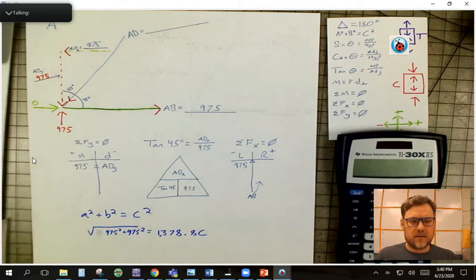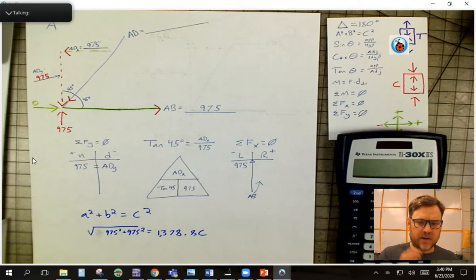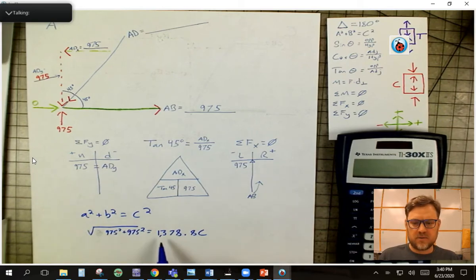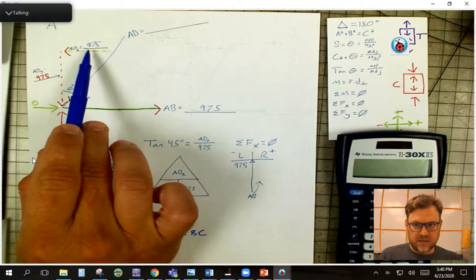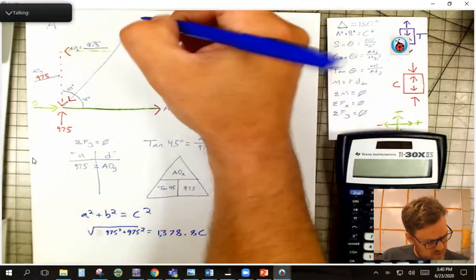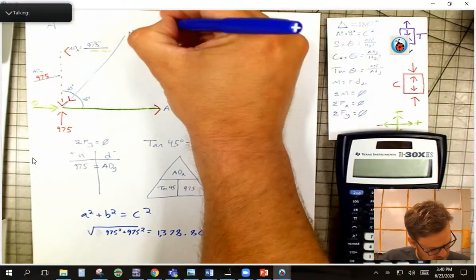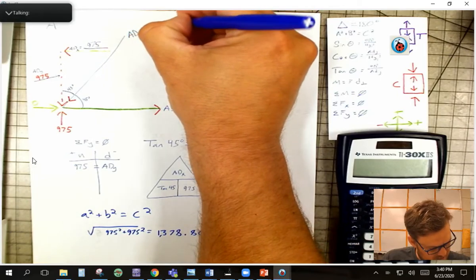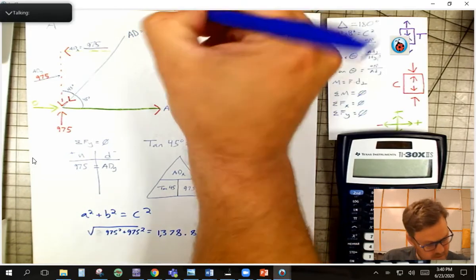Hey, welcome back. I want to go over the rest of this joint A real quick, and I forgot to do the last part, which is to do the Pythagorean Theorem and solve for AD. So we take A squared plus B squared, and we get C squared here, so we know that that guy is 1378.86.